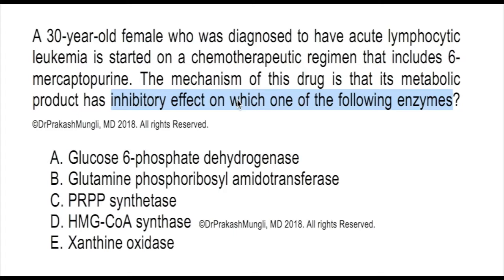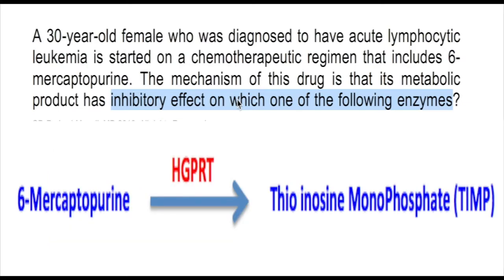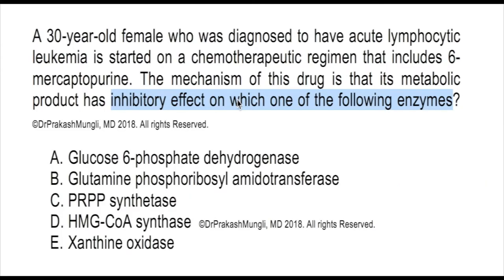If 6-mercaptopurine binds to HGPRT, this enzyme is going to convert 6-mercaptopurine into its metabolic product. This is essentially activation of a prodrug into an active drug. The metabolic product of 6-mercaptopurine is thioinosine monophosphate, that is TIMP. So TIMP is the metabolic product of 6-mercaptopurine, produced by the HGPRT enzyme.